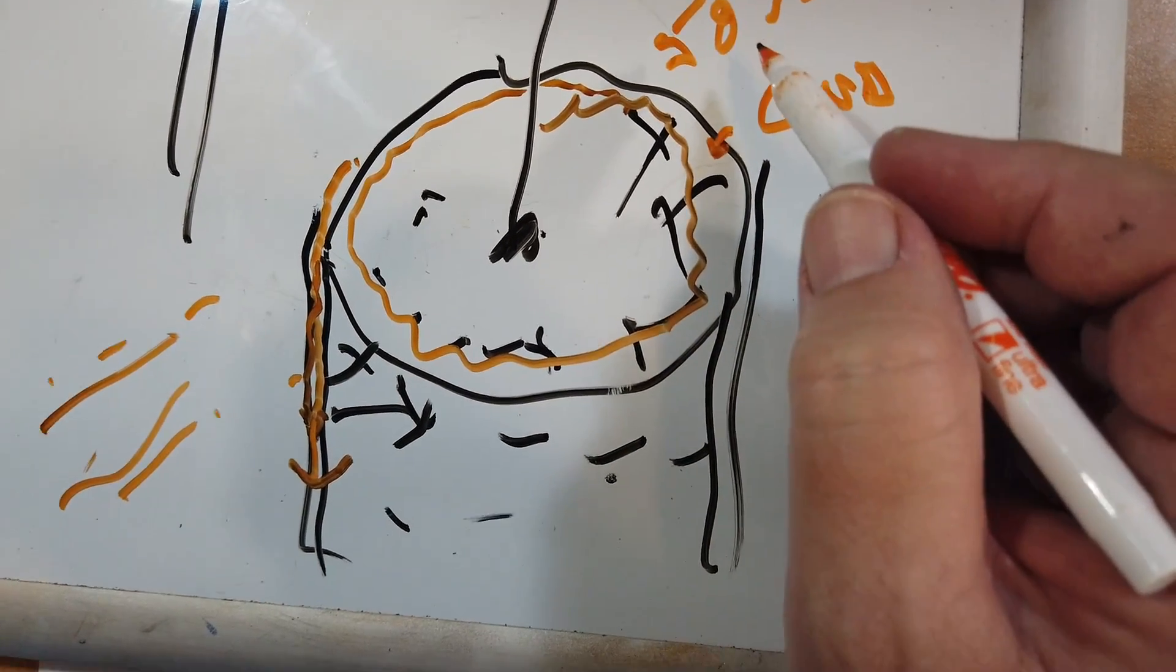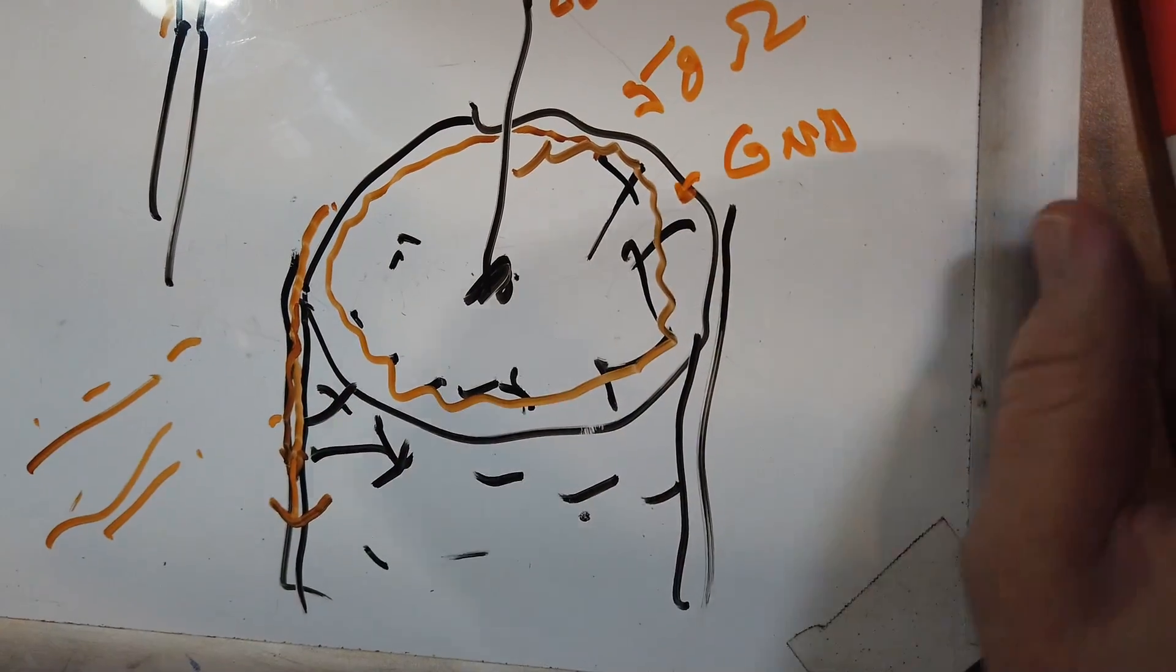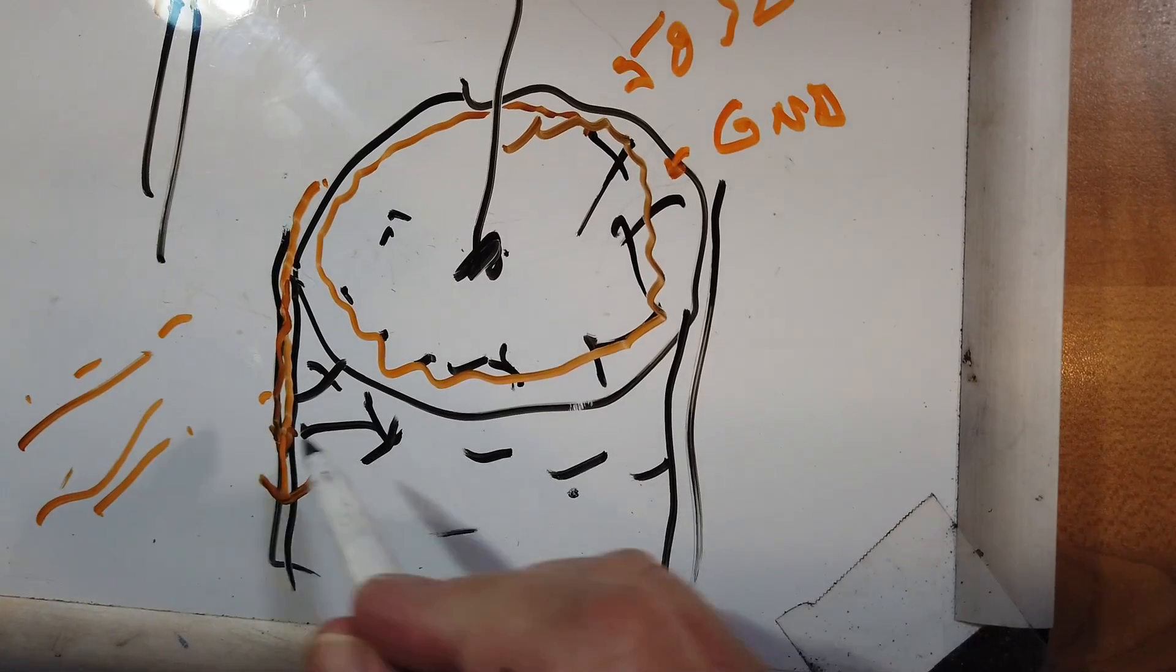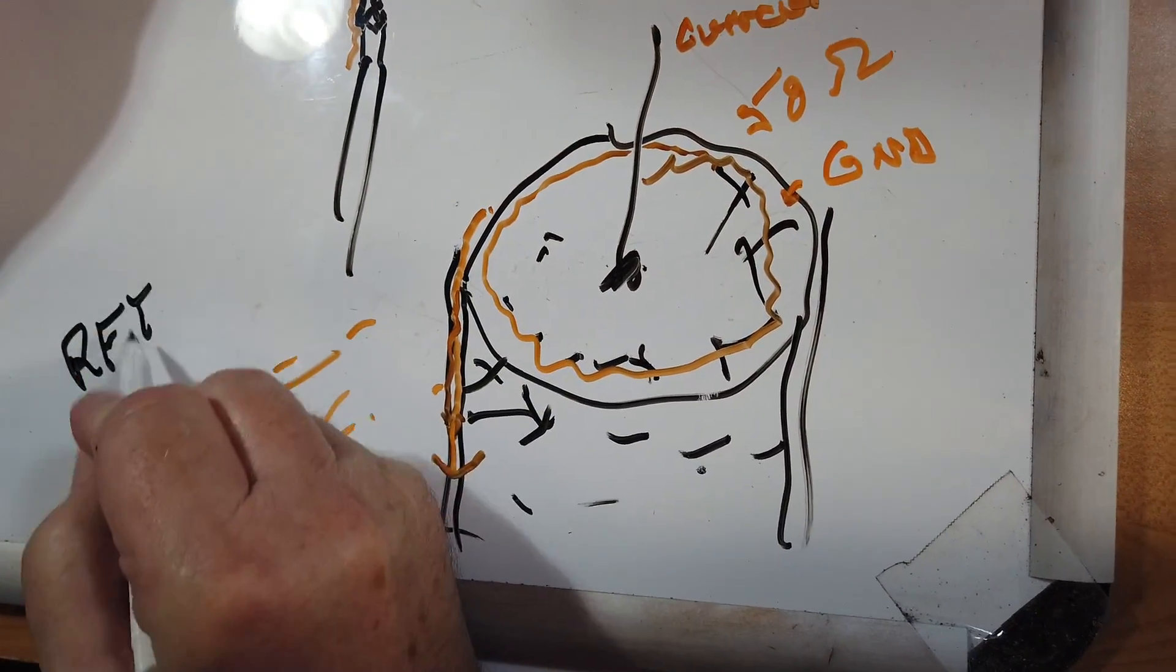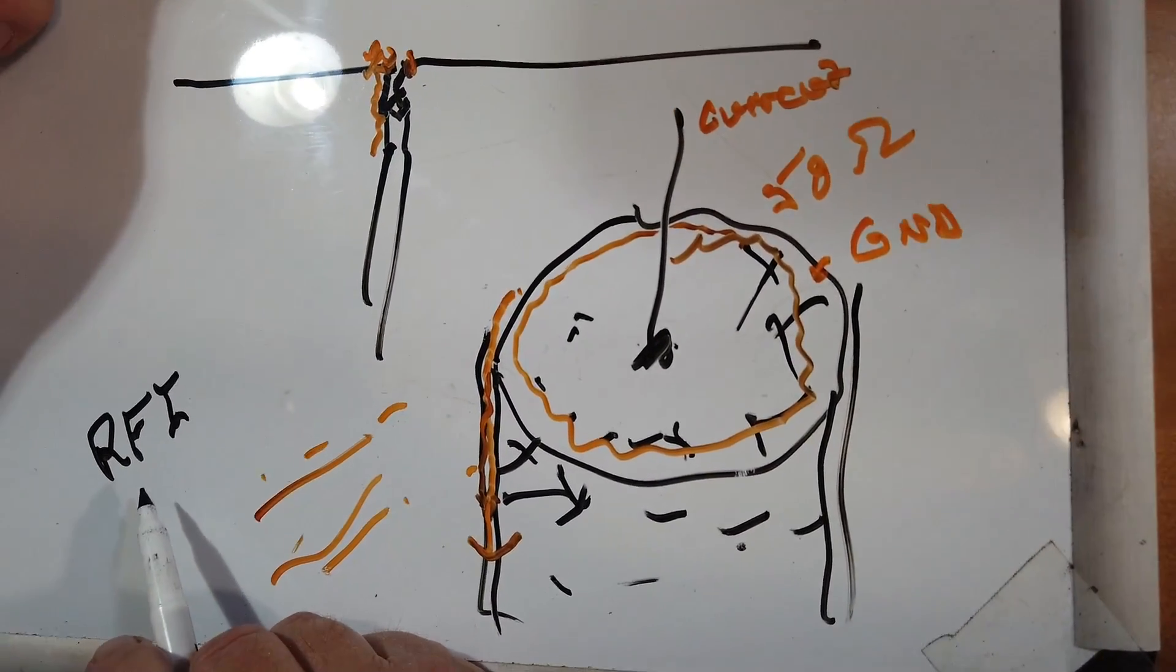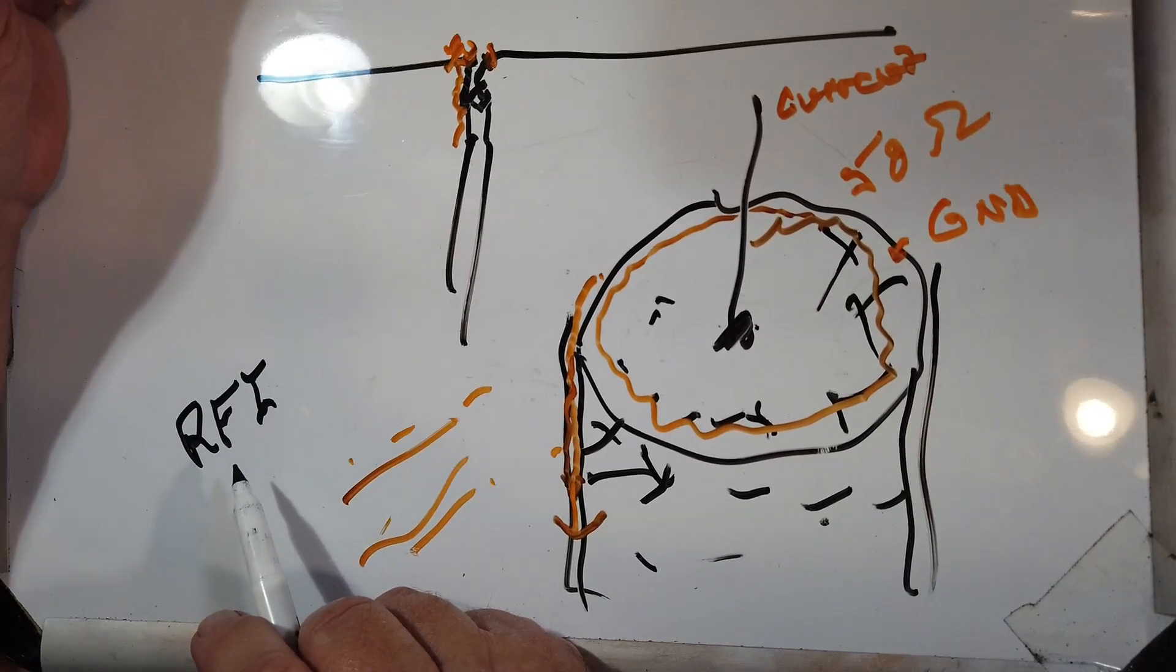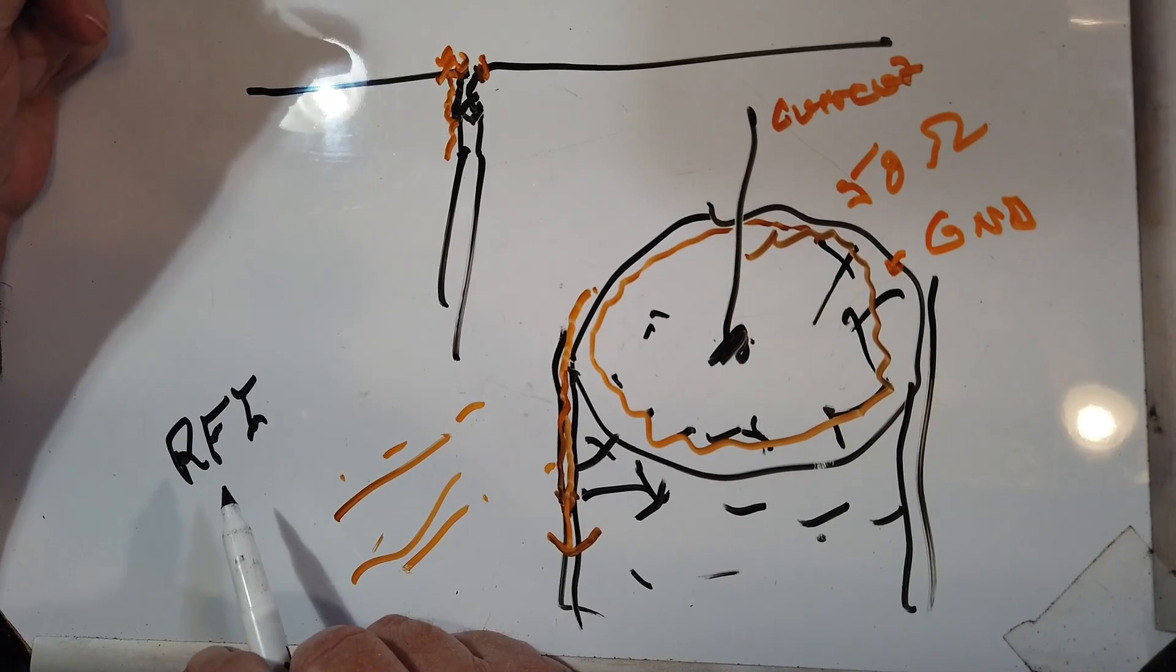This gives you a bad SWR. But the more important thing is that it can give you RFI, or radio frequency interference in the shack. Some of the ways that you can tell you get RFI is if when you press transmit and talk...